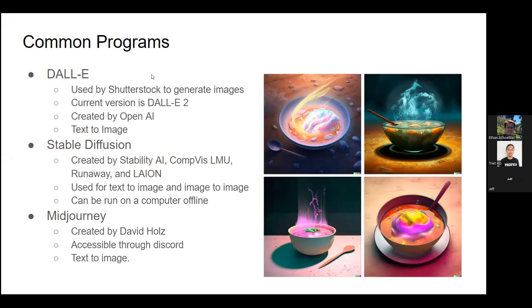The three most common programs are DALL-E, Stable Diffusion, and Midjourney. DALL-E is created by OpenAI and I think it's the biggest one out at the moment. It's also used by Shutterstock - they signed a deal where they will use it to generate some of their images.